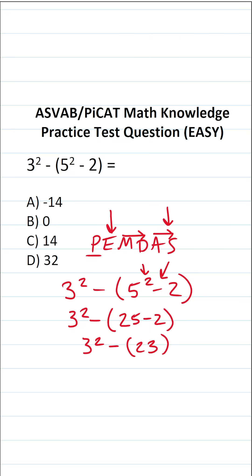Now we have two operations left. We have an exponent here, 3 squared and subtraction here. 3 squared is 3 times 3, which is 9. So this is 9 minus 23.